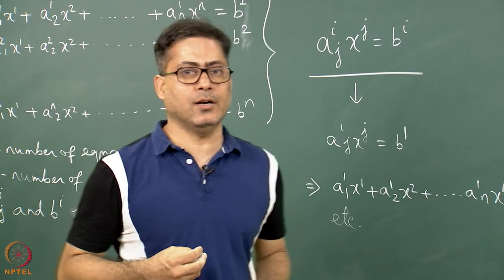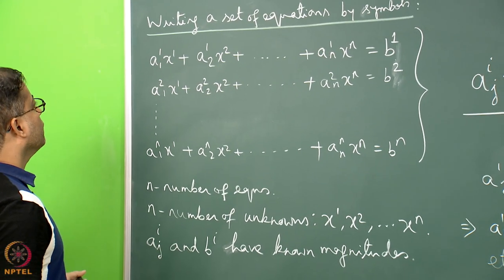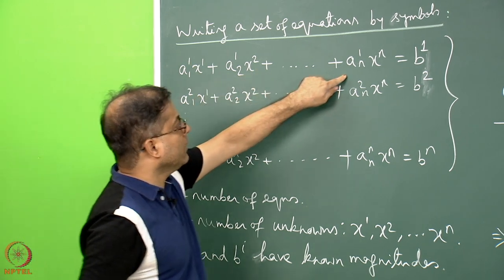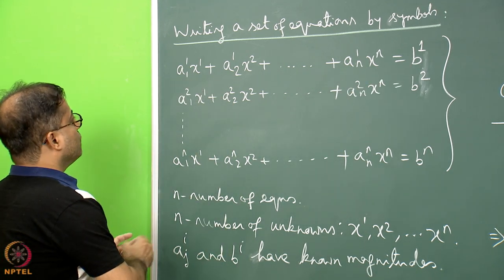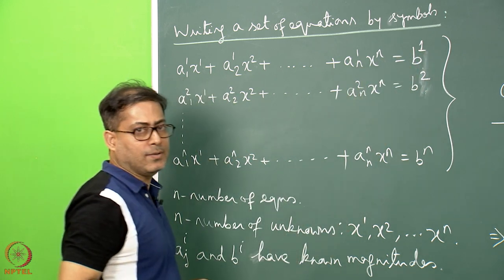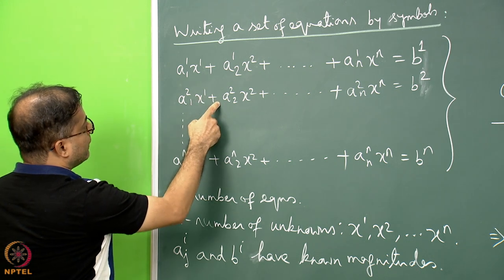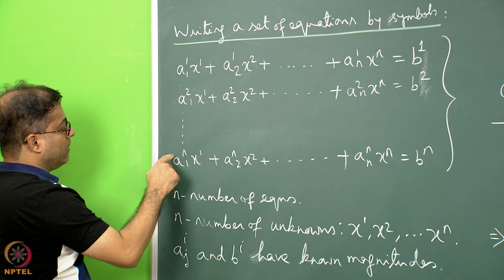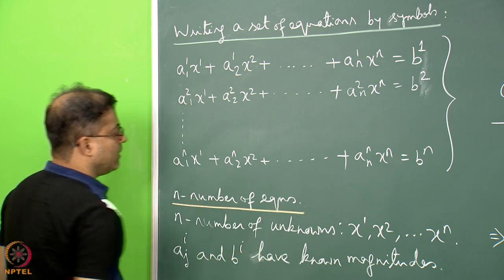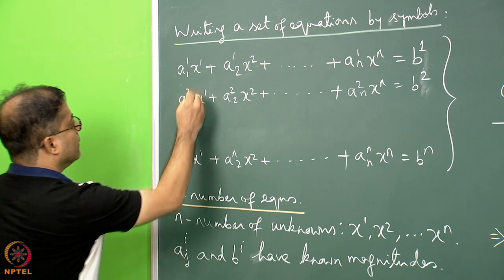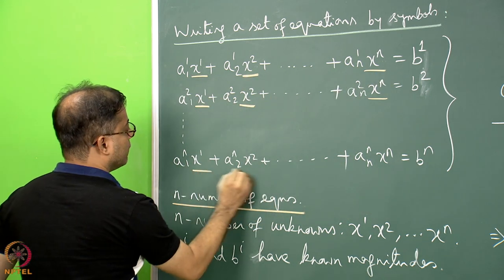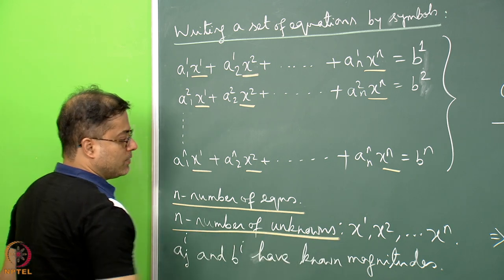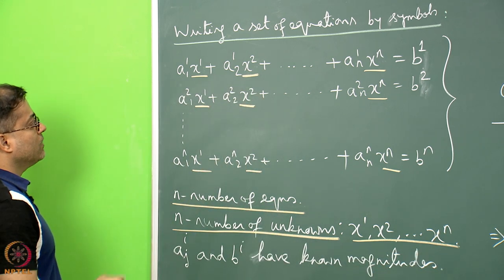Now let us see how a set of equations can be smartly presented using this notation. Consider n equations: a11x1 + a12x2 + … + a1nxn = b1; a21x1 + a22x2 + … = b2; and so on up to the nth equation. There are n equations and n unknowns x1 to xn. The values aᵢⱼ are the known coefficients and bᵢ are known values. For example, 5x + 7y = 17 and 2x − 0.2y = 4 can be mapped: a11=5, a12=7, x1=x, x2=y, b1=17, b2=4.